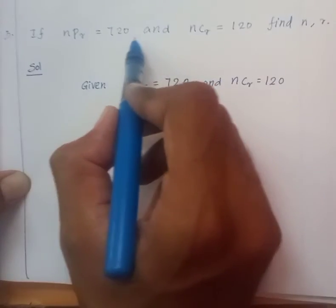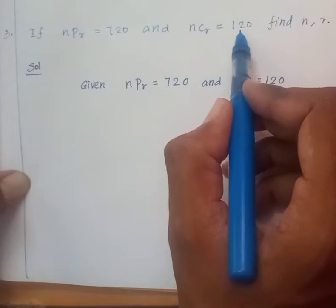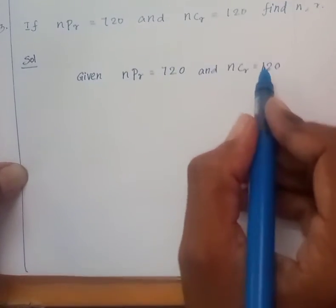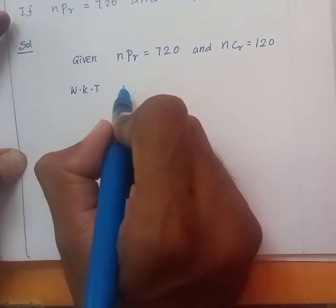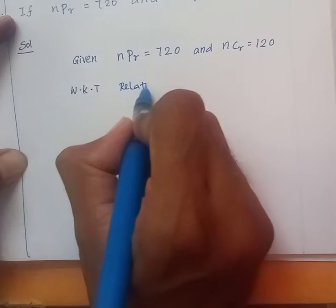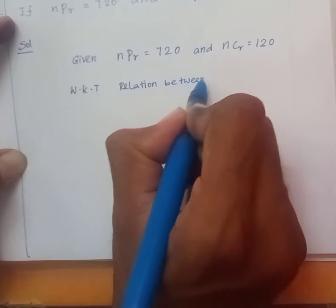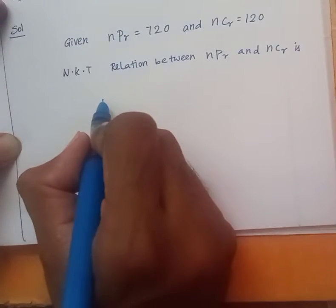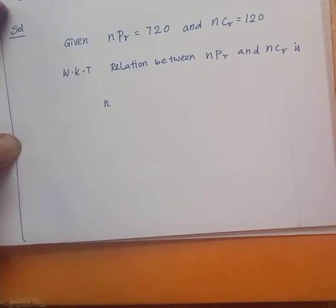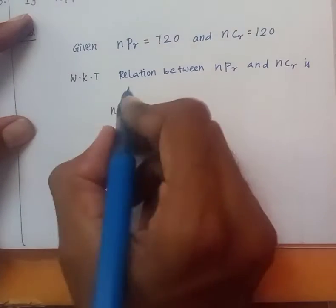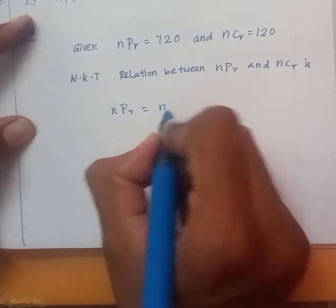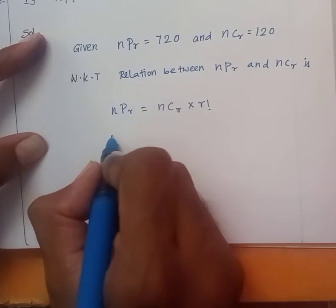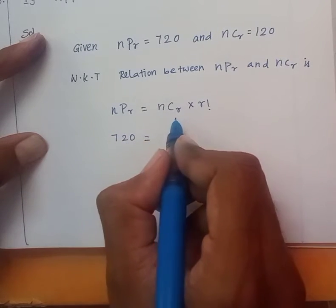Given nPr equal to 720 and nCr equal to 120, find N and R. We know that the relationship between nPr and nCr is: nPr equal to nCr into R factorial.